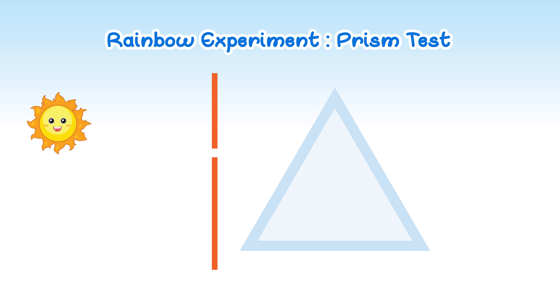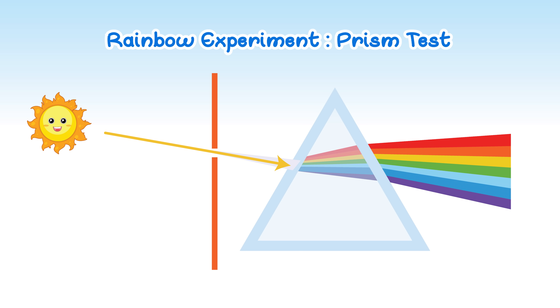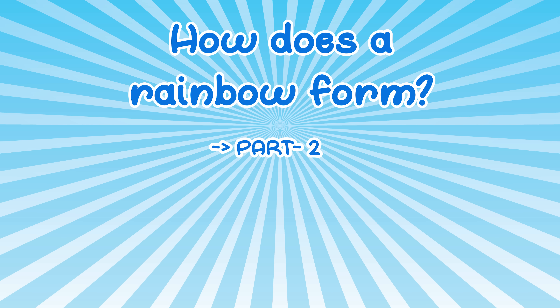Now, prism test! Place a prism in the way of sunlight. You can easily see seven colors of light. Now we can believe that sunlight is a combination of seven colors of light.